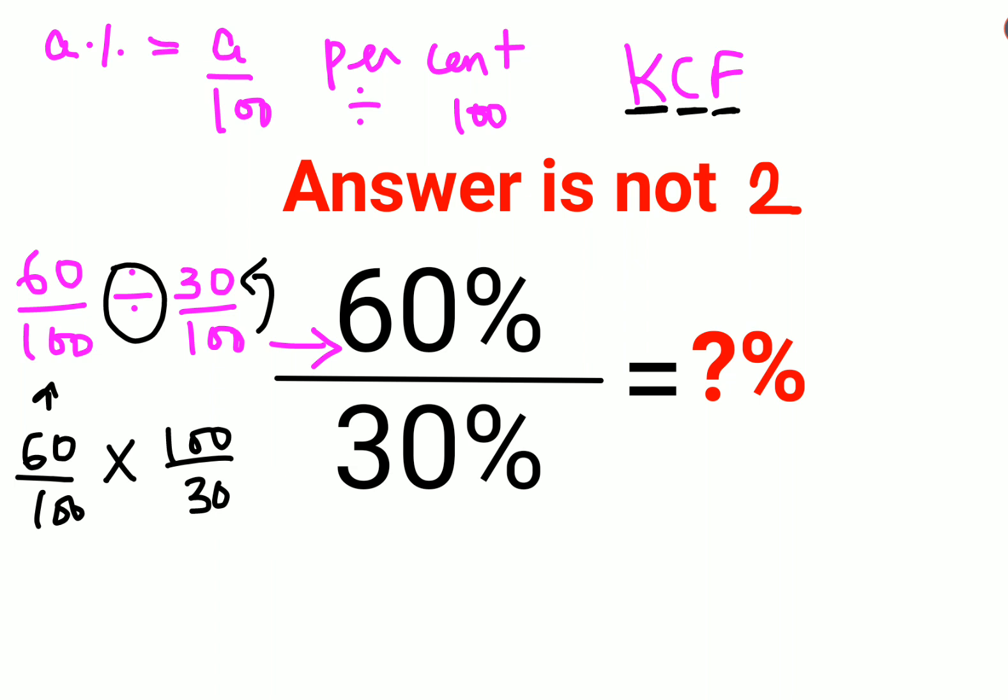So now when you cancel all of this, this and this gets cancelled completely and this is 1's and 2's are. So basically you're getting the answer as 2. But unfortunately, you're wanting the answer in terms of a percent.